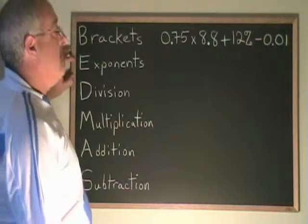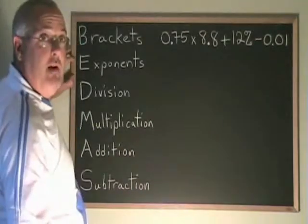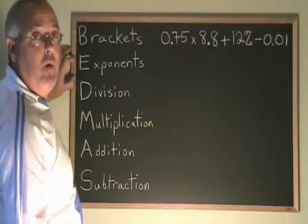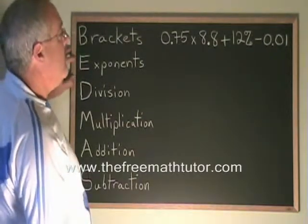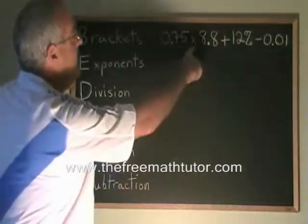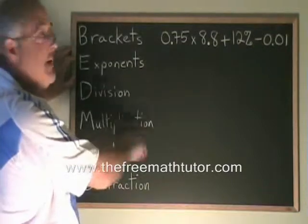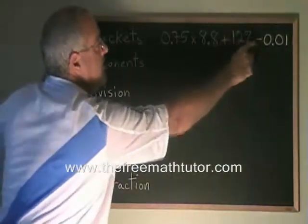In this example, we have 0.75 times 8.8 plus 12% minus 0.01. The order of operations will have me do this multiplication first because multiplication happens earlier in BEDMAS than addition or subtraction.